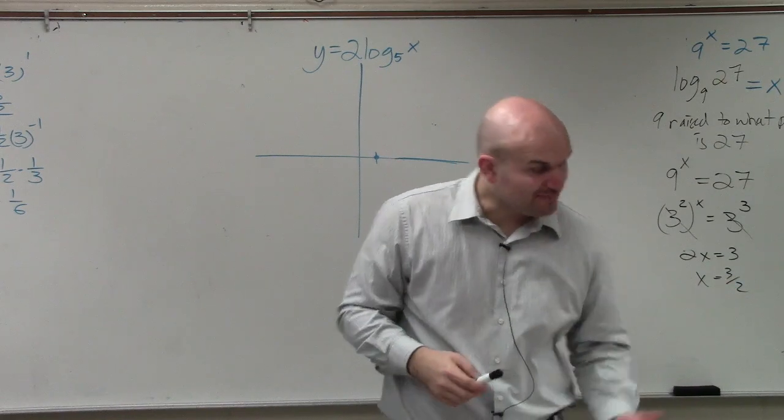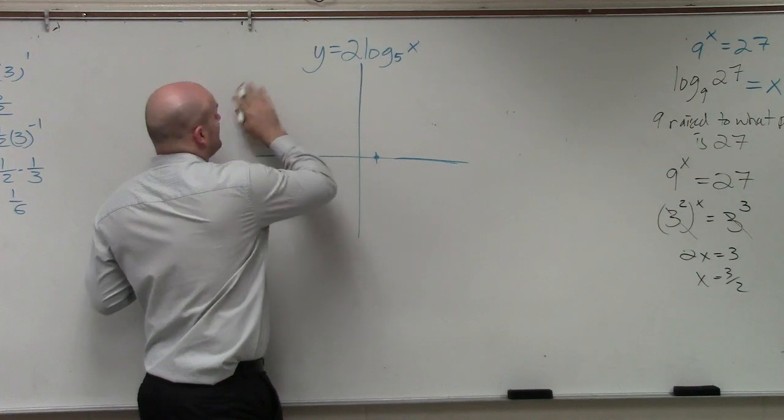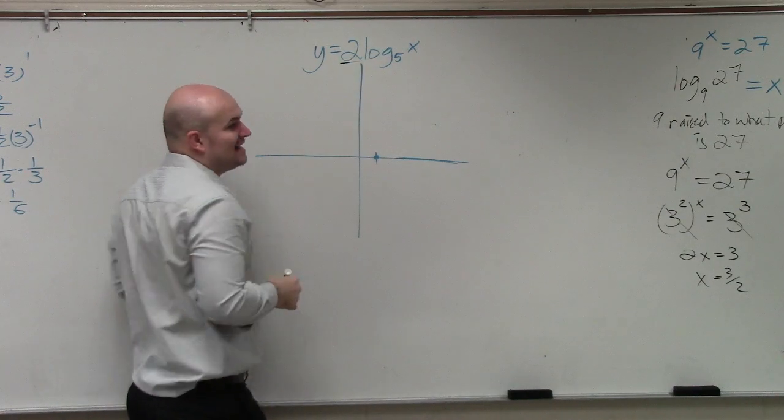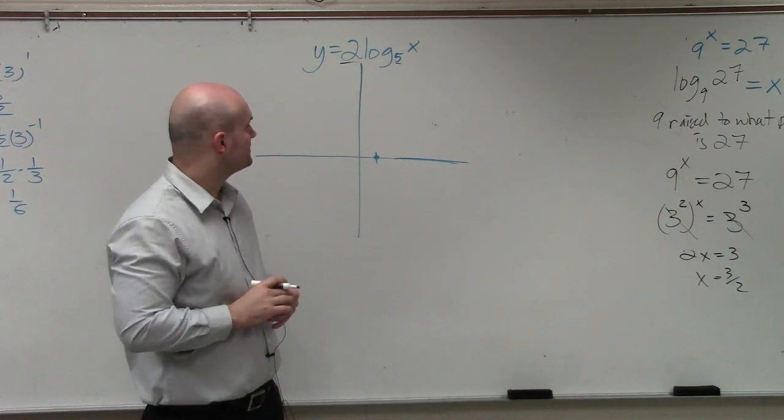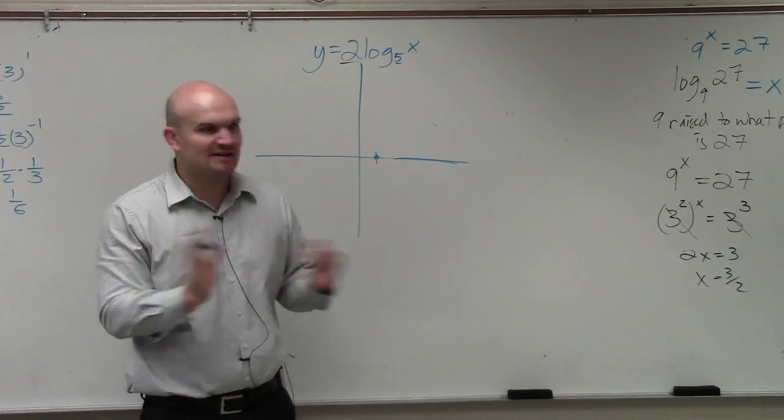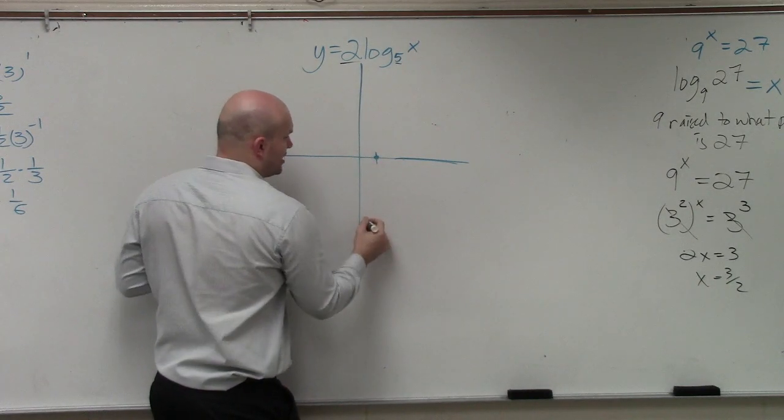So if you guys remember, when we looked at this graph, this actually did not, neither did these affect our transformations at all. They're not shifting your graph left or right or up or down at all. All these did, the graph still crosses at 1, 0.